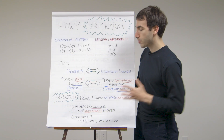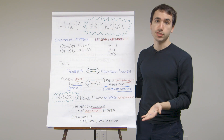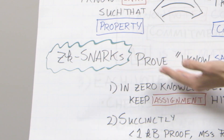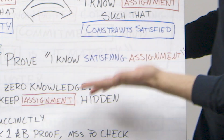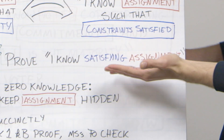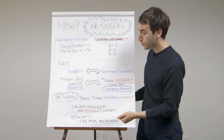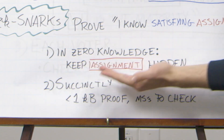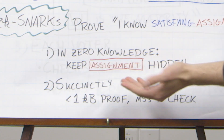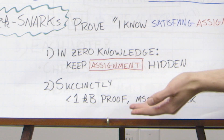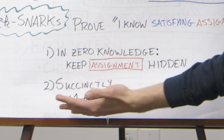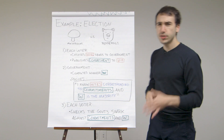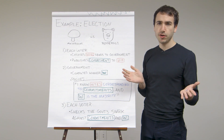Now that we have that background, we're equipped to understand what ZK-SNARKs actually do for us. ZK-SNARKs let you prove statements of the form: I know a satisfying assignment to some constraint system, and those proofs have two key properties. First, they're zero knowledge — they keep the assignment itself hidden. Second, they're succinct: very small, a few hundred bytes, less than a kilobyte, and they take only milliseconds to check.